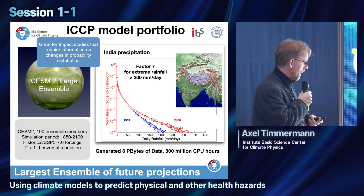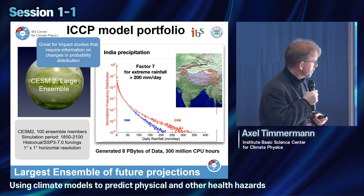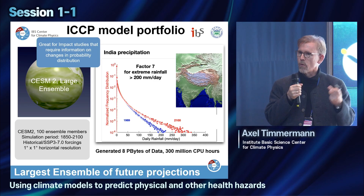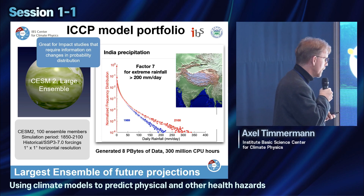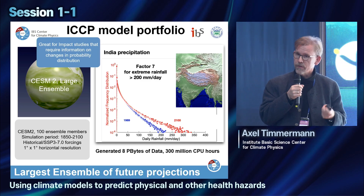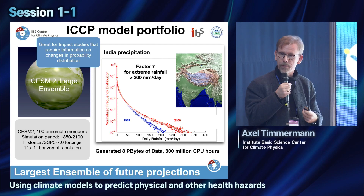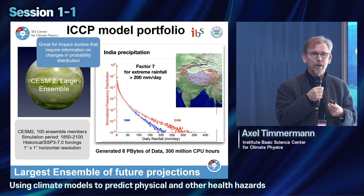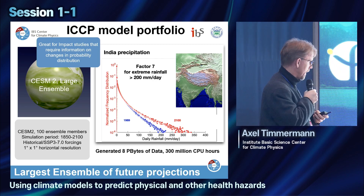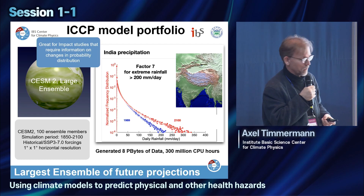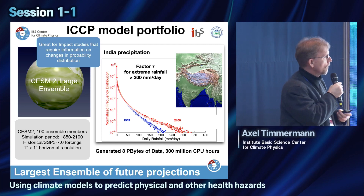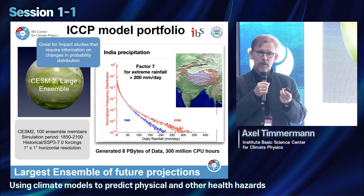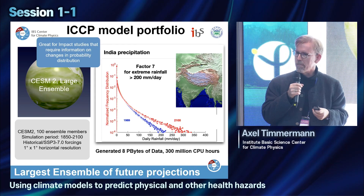We conducted what we call a large ensemble of future climate model simulations. We take the community Earth system model at a global resolution of about one degree — a mesh of about 100 kilometers — and run this model from 850 to 2014 using historical estimates of forcings and greenhouse gas concentrations. From 2015 to 2100, we run a middle-of-the-road scenario. We run the model 100 times, slightly perturbing some parameters each time, allowing us to explore the full probability distribution of the climate system.